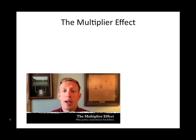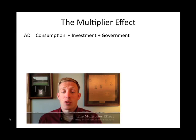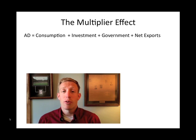Aggregate demand is made up of four things: consumption, which is household spending; investment, which is typically business spending; government spending; and net exports. Net exports are sort of the foreign or the international component of GDP.